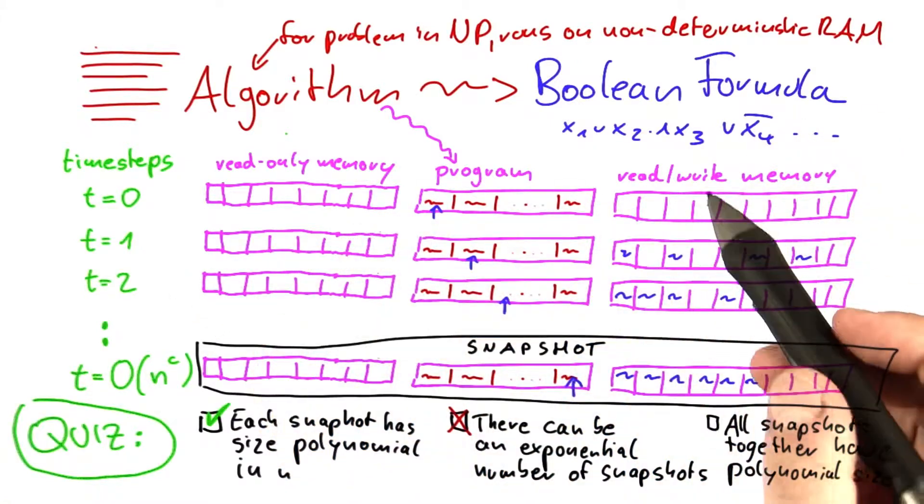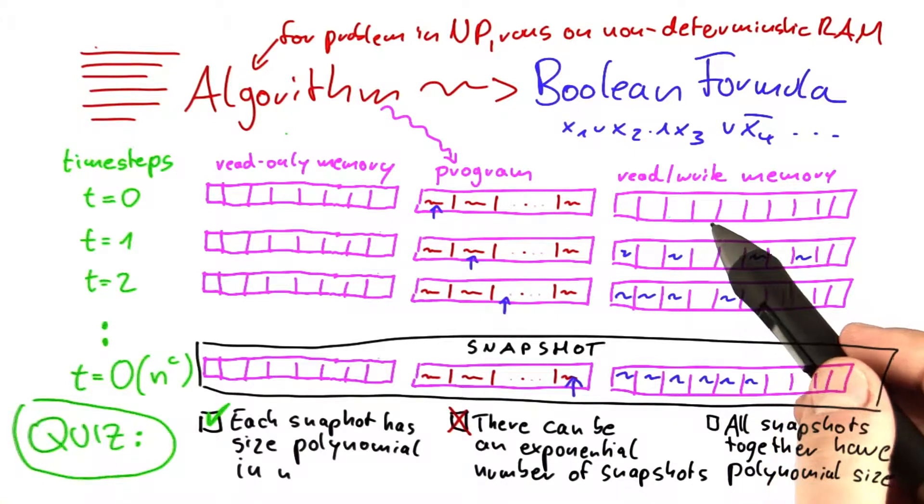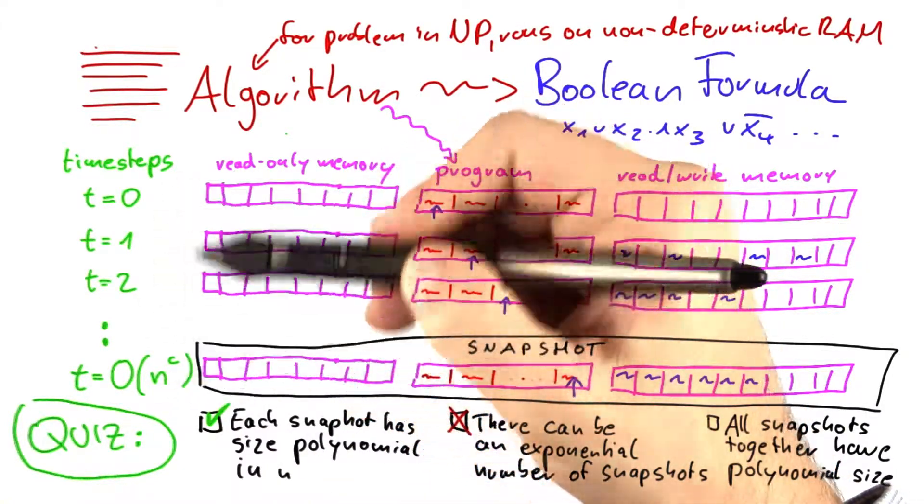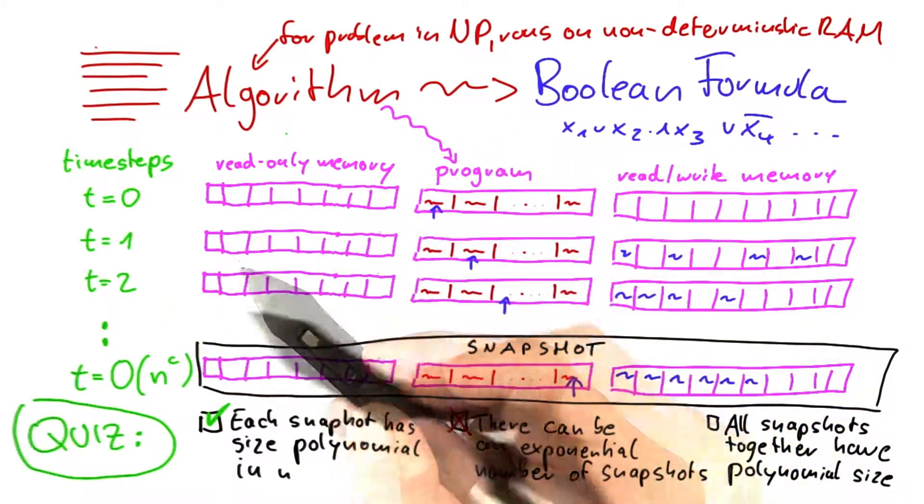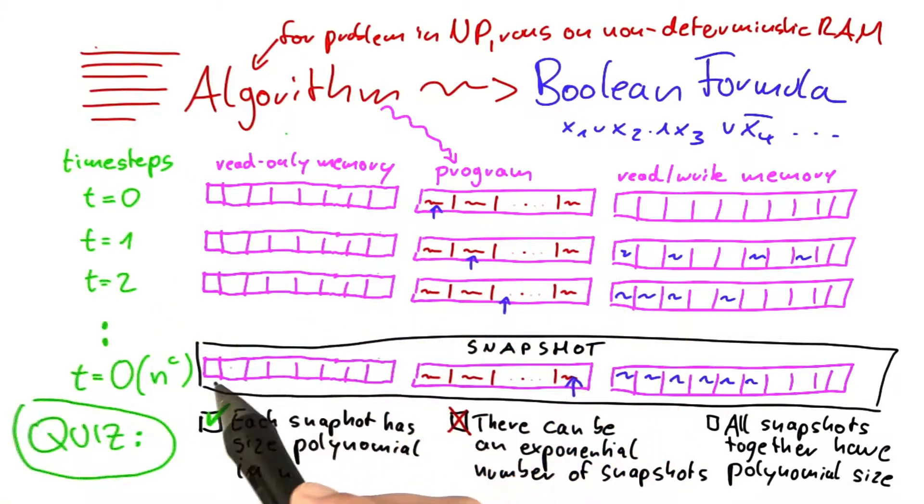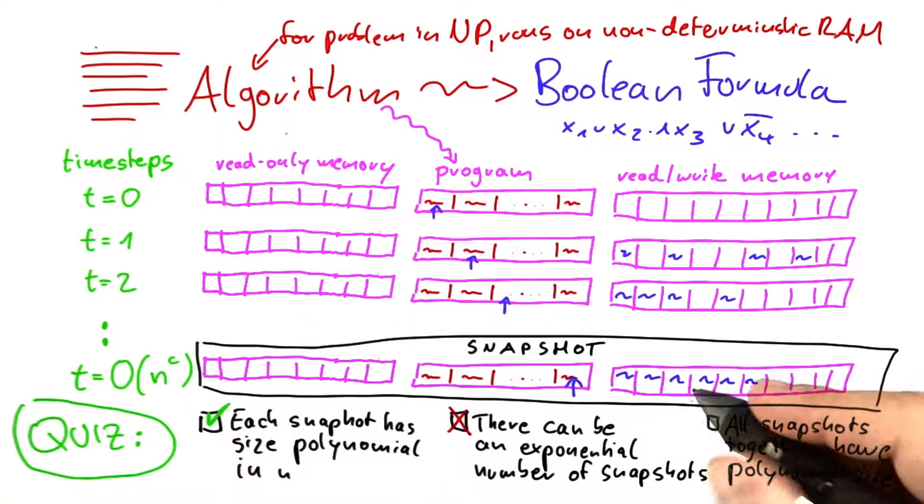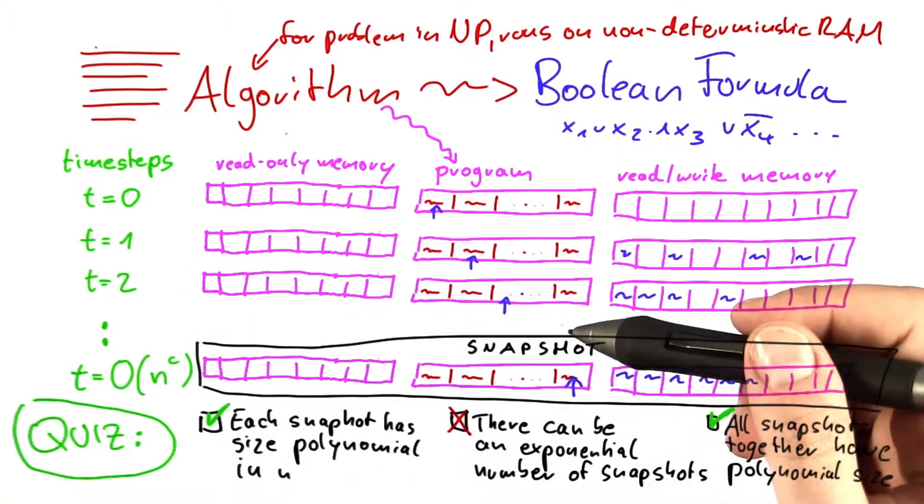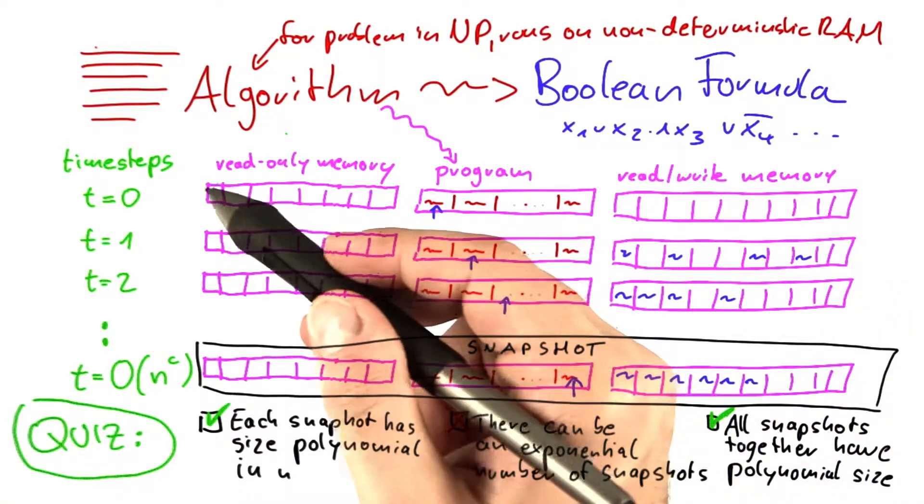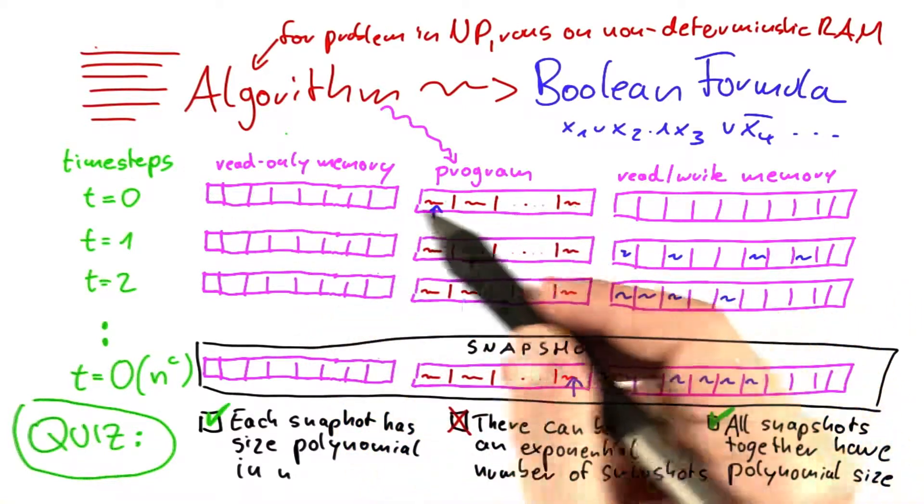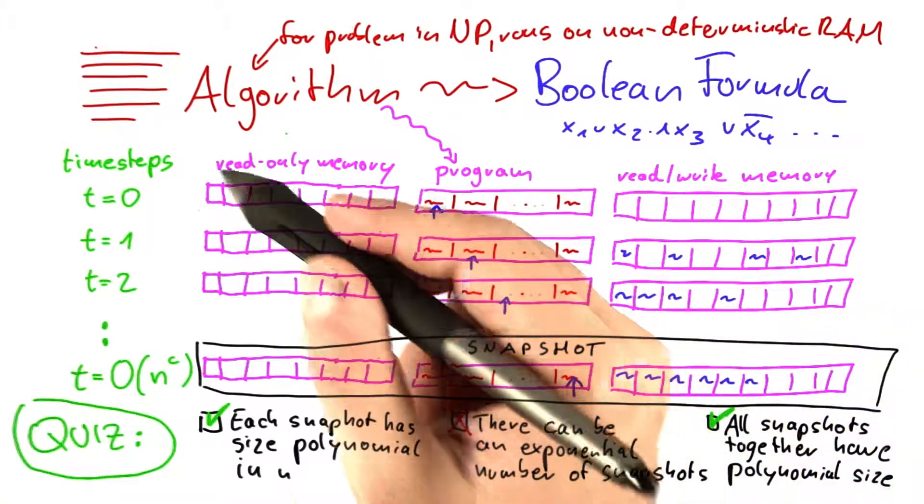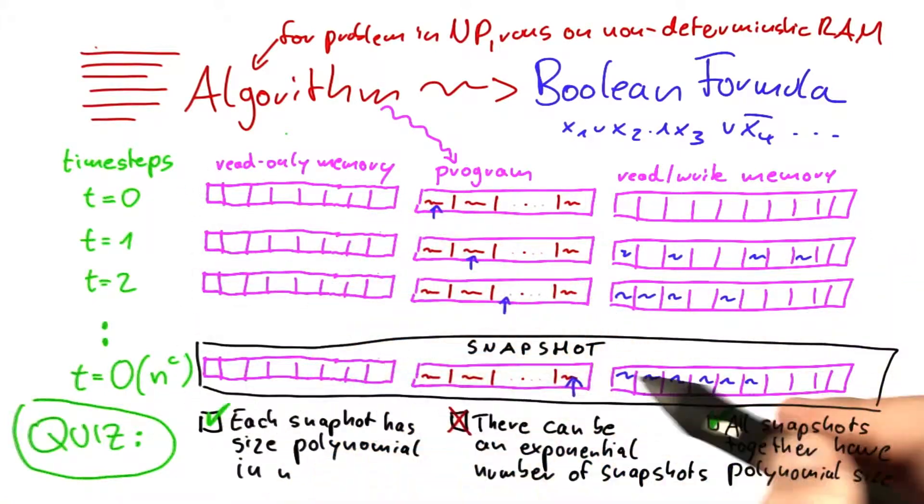But this, if you take it together, is very useful for the proof that we're trying to do because if each snapshot has a size that's polynomial in n and the total number of snapshots that we have is a polynomial, then you have a situation where you have a polynomial number of polynomial size snapshots, which means that the size of it all taken together is a polynomial times a polynomial, which again is a polynomial. So basically, a complete protocol of what this algorithm here is doing, given this input and using this memory here, the complete protocol only takes up a polynomial amount of space, polynomial in n, the size of the input.